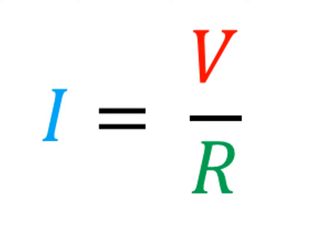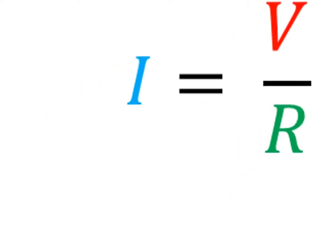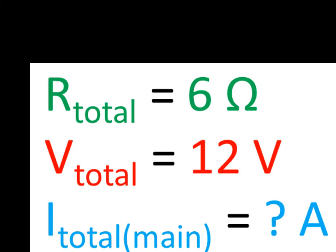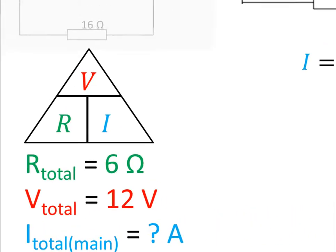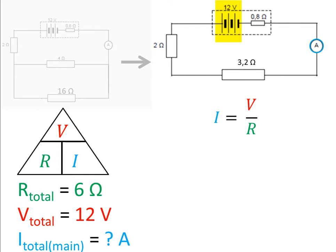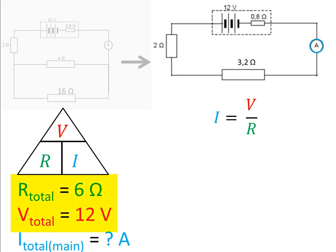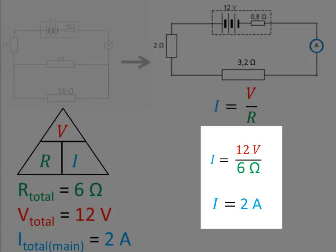When we apply this formula, it's important to make sure we are consistent between the variables. In this case, all our variables refer to the total values for the whole circuit: the total circuit resistance, the supply voltage, and I main. If we take the supply voltage to be the EMF — 12 volts in this case — then we are taking the total circuit resistance including the battery internal resistance. Substituting those values, we find that I main is 2 amperes.